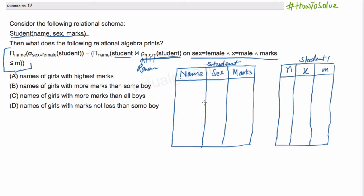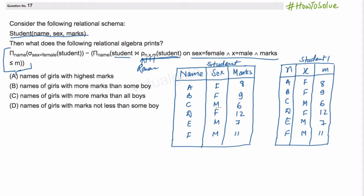Let us fill up this table to understand it properly. I have filled up this table with some example records. This table student1 is exactly the clone of student, so all the values will be as they are.